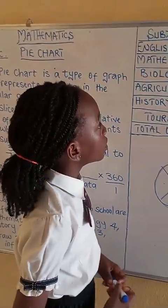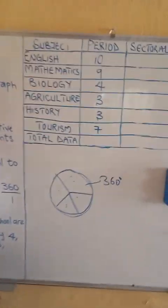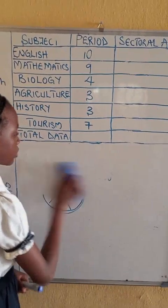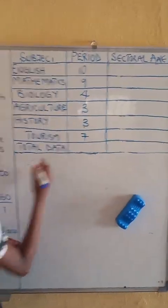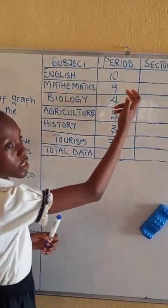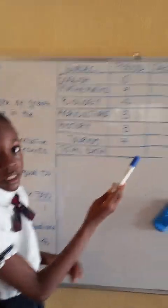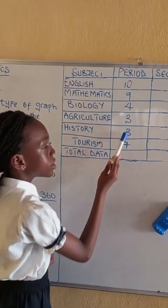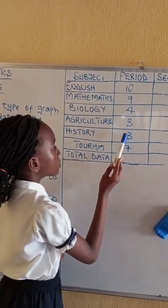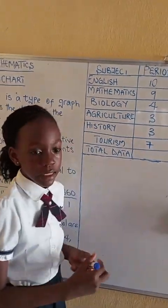To get the sectoral angle, you have to use each of the period to get the sectoral angle. You first of all add the periods. 10 plus 9 is 19, 19 plus 4 is 23, 23 plus 3 is 26, 26 plus 3 is 29, and 29 plus 7 is 36. So the total data of the period is 36.